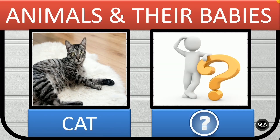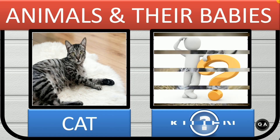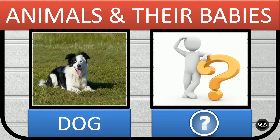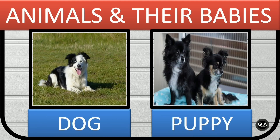Cat. Cat's baby is kitten. Dog. Dog's baby is puppy.